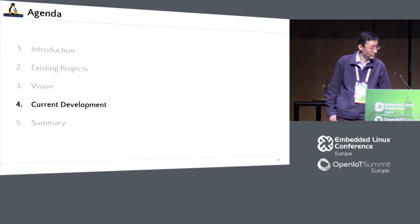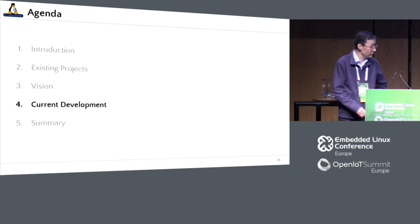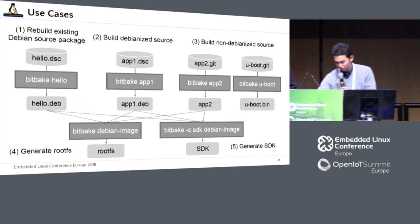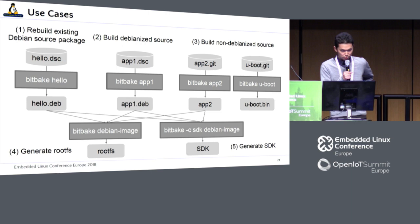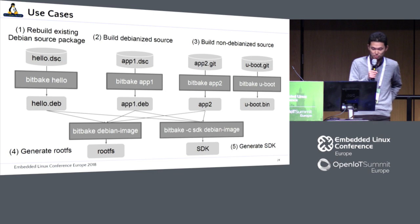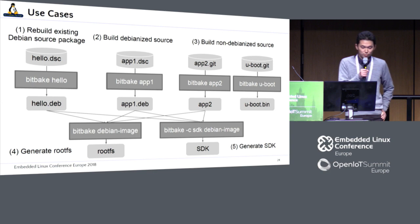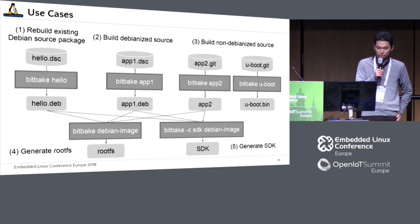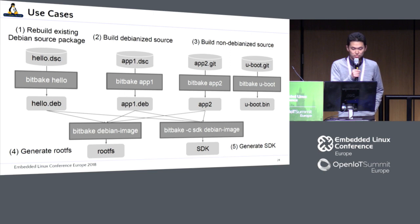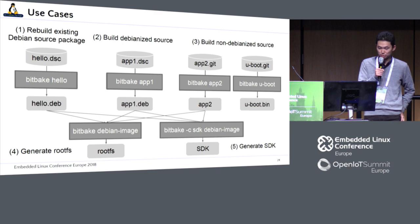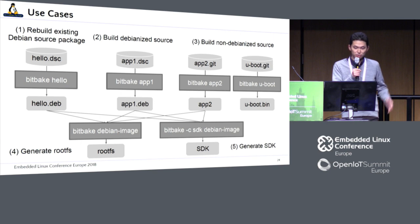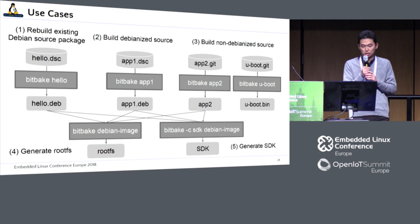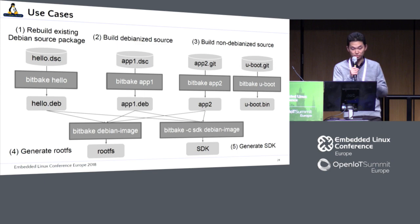I'd like to pass over to Kazu for current development. From this slide, I'd like to explain some technical parts. We've already defined some common visions, so it's time to define some use cases for our tools. There are five main use cases. The first is to rebuild existing Debian sources by just typing the BitBake hello command — an example for the hello package included in official Debian packages. The second is to build a Debianized source, where the source tree includes Debian metadata. In this case, we can build binary packages by just typing, for example, bitbake app1.